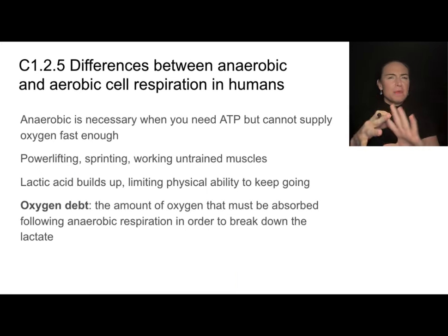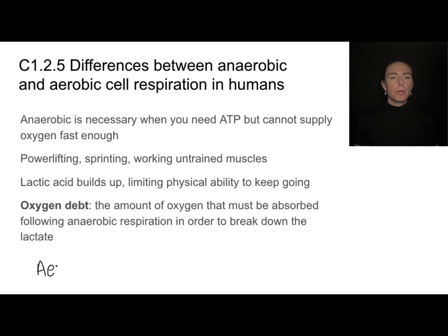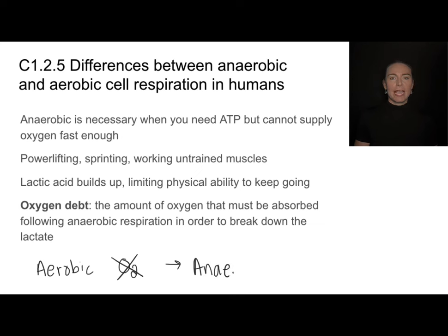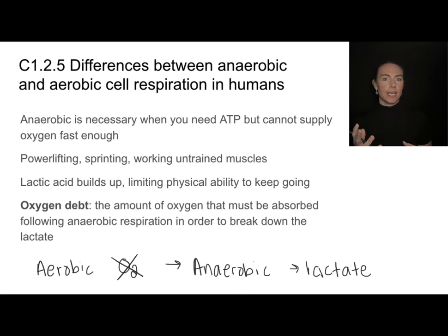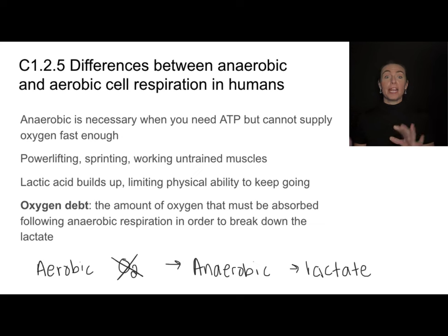So why would a human ever do anaerobic? There may not be enough oxygen available. We always start with the aerobic pathway when possible, but when oxygen runs out or can't be delivered fast enough, we switch to the anaerobic pathway, which produces lactate. Eventually this lactate must be broken down — we can't just have it accumulating in our cells; it limits our physical ability and is very painful. So we must have oxygen later on in order to break down that lactate.